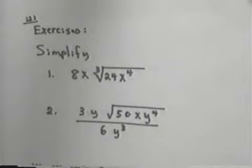The second one, 3y times the square root of 50xy to the 4th over 6y cubed. Copy the exercises and then stop the tape. Restart the tape to compare answers.